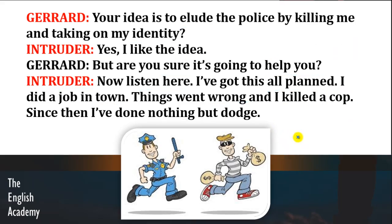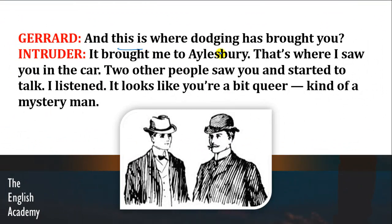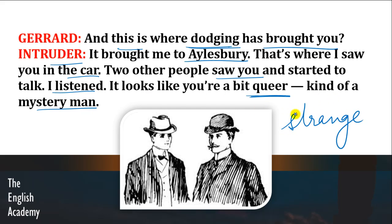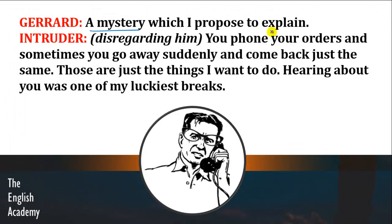And this is where intruder saw Gerard in a car. Two other people saw Gerard and started to talk. Intruder listened. 'It looks like you are a bit queer, kind of a mystery man.' Queer means something which is strange — ajeeb. Intruder Girard ko kehta hai ke woh usse mysterious aur ajeeb insaan lagta tha.